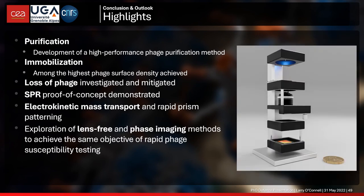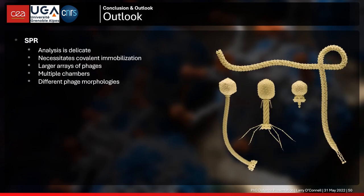Other aspects of the PhD not covered here included exploration of lensless and phase imaging methods to achieve the same objective of rapid phage susceptibility testing. In terms of future work, the SPR technique for phage susceptibility testing is quite delicate — it necessitates covalent immobilization of bacteriophages onto a solid surface, and there's a big question mark over whether these immobilized bacteriophages will behave the same as they would in vivo. We should also concentrate on larger arrays of phages, since the motivation is to demonstrate a technique extensible to many dozens or hundreds of bacteriophage candidates.